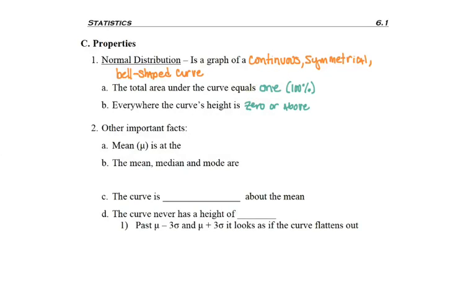A couple other things that we should discuss: first of all, if you remember how mean stands for average and we use the symbol mu to represent a population average, we need to know that the mean is at the highest point of the curve, which for us will be the center because it's symmetrical. And the mean, median, and mode are all equal and located at the center.